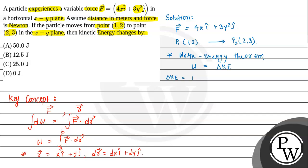This is work done. Work done will be force vector dot product with position vector. So we can write W equal to force, which is given as 4x i-cap plus 3y² j-cap, dot product with dr, which in the xy plane is dx i-cap plus dy j-cap.